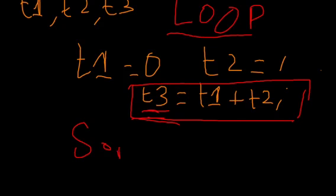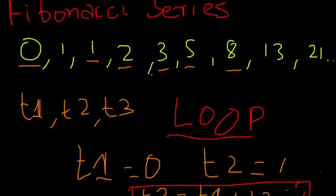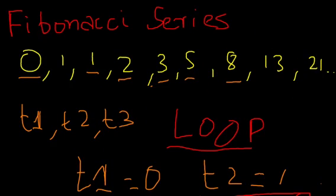The third term is the sum of the first two. There you can, let's say, print out your t3 inside your loop. Once you print out t3, you need to make a few observations over here.